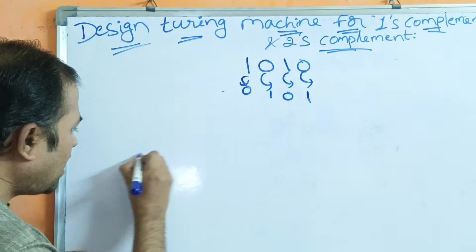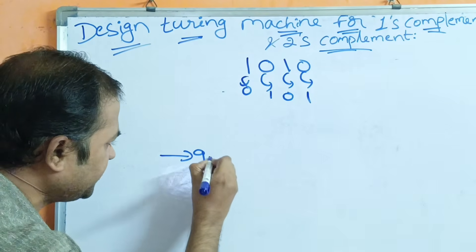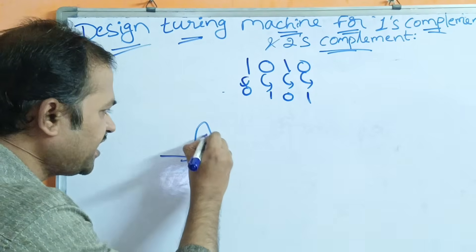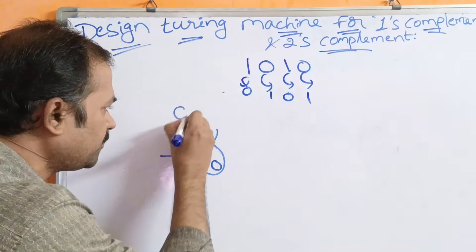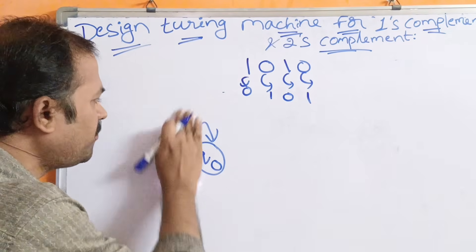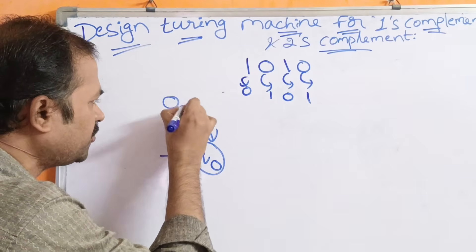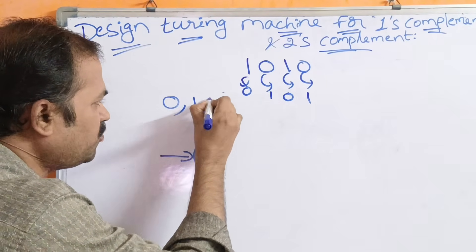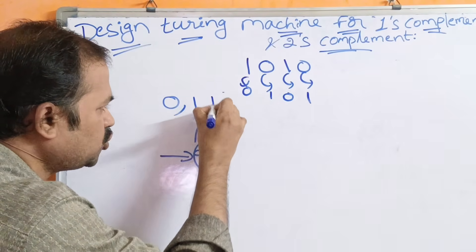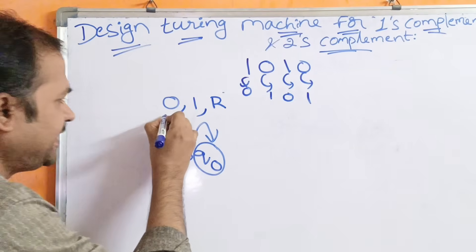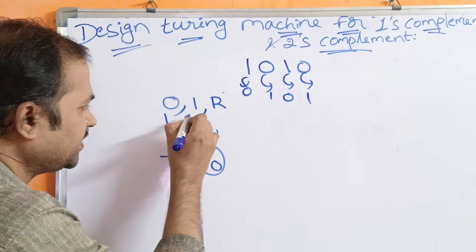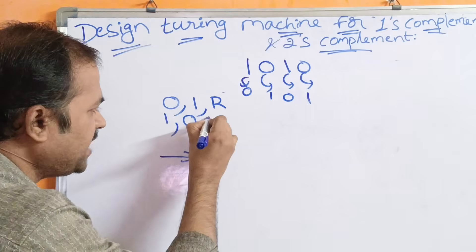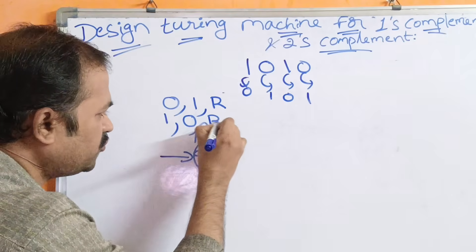So let us start at state q0, which is the initial state. If the input is 0, replace 0 by 1 and move the head towards the right. If the input is 1, replace it by 0 and move the head towards the right.